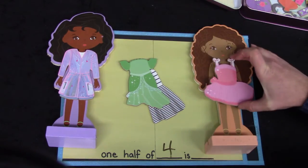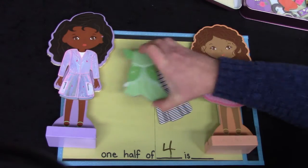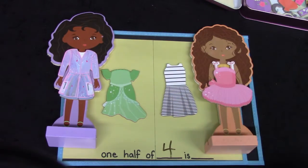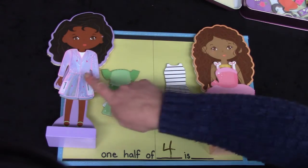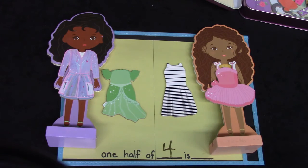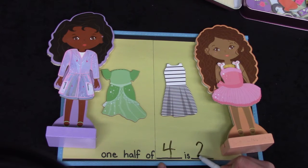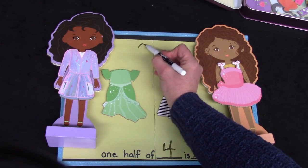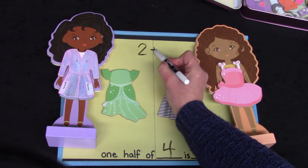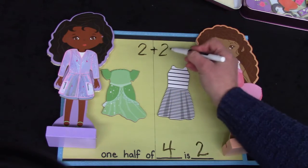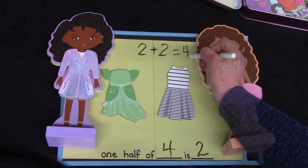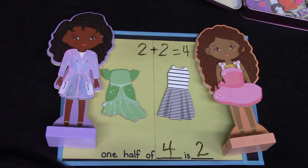We'll have one on each side and then an extra dress on each side. Each friend gets to play with how many dresses? That's right. They each get two when they're sharing the four dresses. Two plus two equals four or one half of four is two.